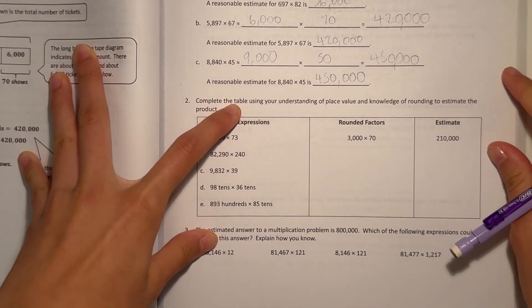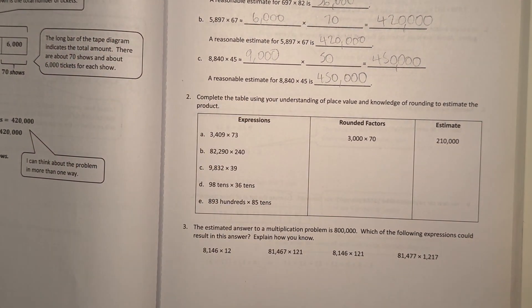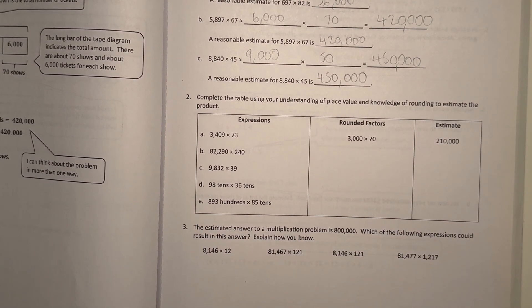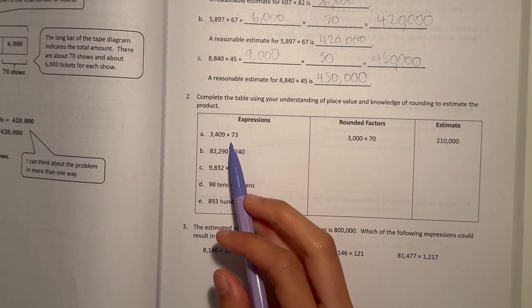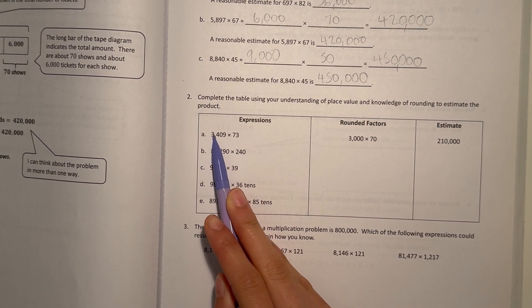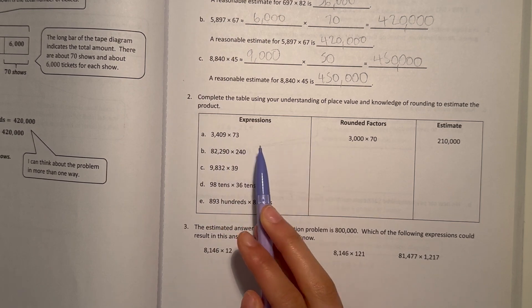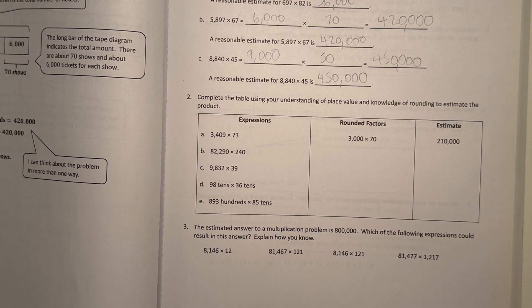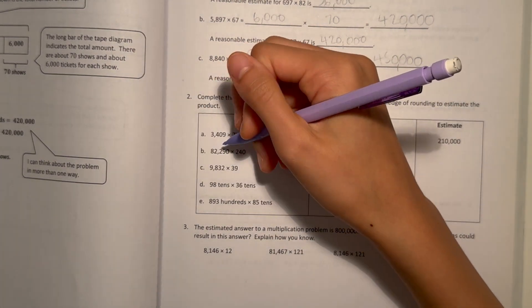Number 2. Complete the table using your understanding of place value and knowledge of rounding to estimate the product. First, I have 3,409 × 73. Round to the nearest thousands for this one, so I have 3,000, and now to the nearest tens times 70, and that would be 210,000.